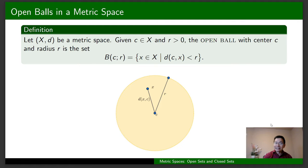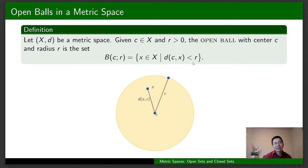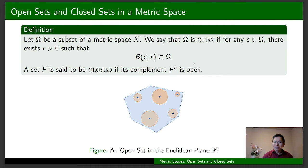Let c be an element of X and let r be a positive real number. The open ball with center c and radius r is the set B(c, r) consisting of all x in X such that the distance between c and x is less than r. Please see the link in the description below for more information about open balls in metric spaces.